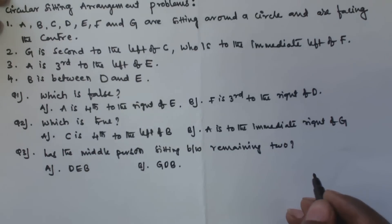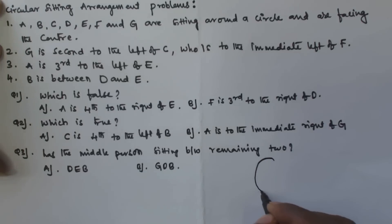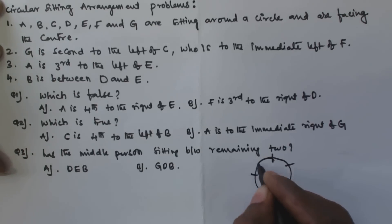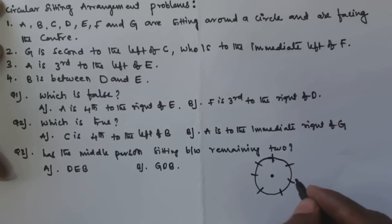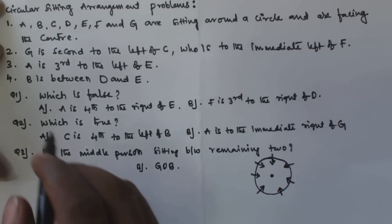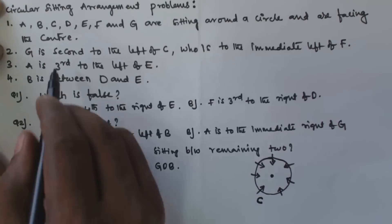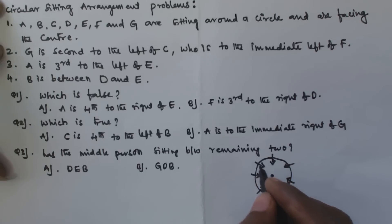Now let us establish the sitting positions for A, B, C, D, E, F, and G. Consider a circle with seven positions. All are facing toward the center. From statement two, G is second to the left of C. Assuming C is sitting at a position, facing the center — right side and left side defined accordingly — the second position to the left of C is where G sits.